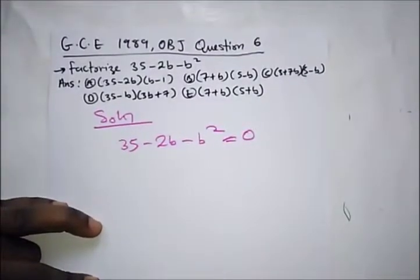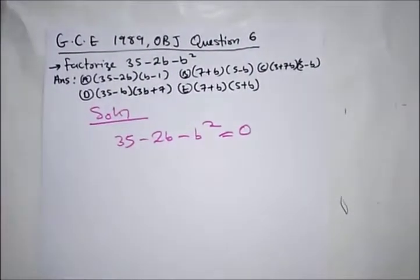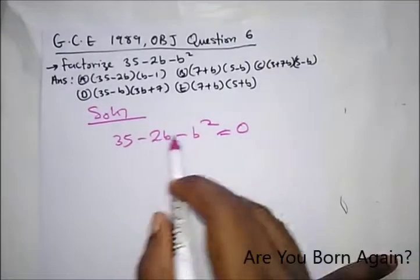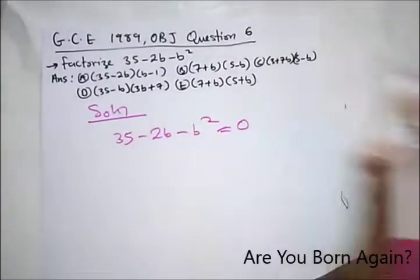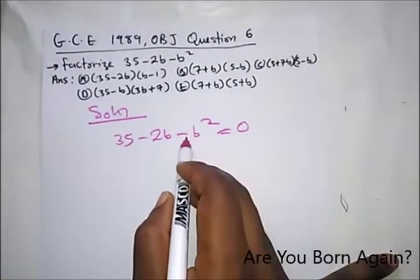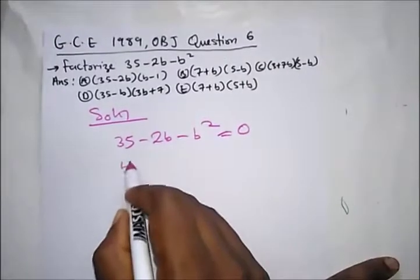All we need to do is take each of these values to the other side. So we have taking minus b square here, we have b square.